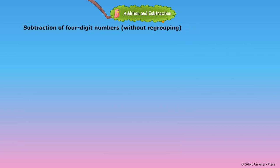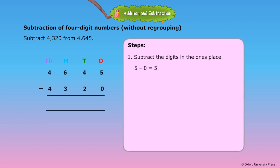Subtraction of 4-digit numbers without regrouping. Subtract 4,320 from 4,645. Step 1: Subtract the digits in the 1's place. 5 minus 0 is equal to 5.